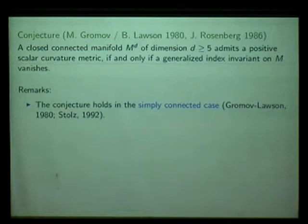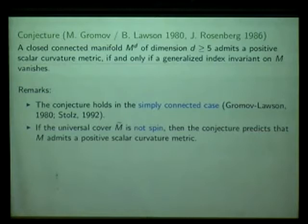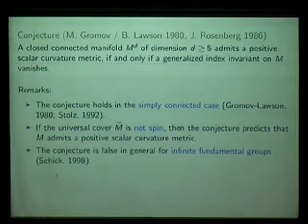These construction principles allow us to connect the problem into a topological setting and language that can be treated by fairly abstract and efficient methods from algebraic topology. In the non-spin case, the prediction is that if the universal covering of M is a non-spin manifold, then M is conjectured to admit a positive scalar curvature metric — so no obstruction at all.